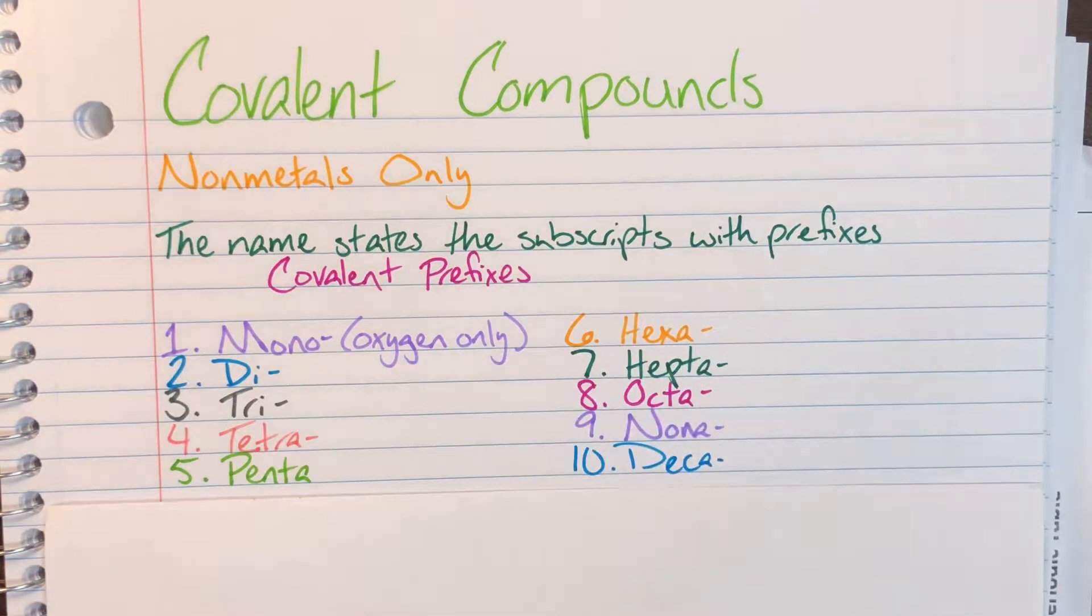So we have the prefix of mono, mono meaning one. Mono is actually only really going to be used for oxygen, and only if oxygen is in that second place. So if he is the second element listed and there's only one of him, then you're going to have that prefix of mono. Everybody else is not special enough for that mono prefix, so it will be oxygen only.